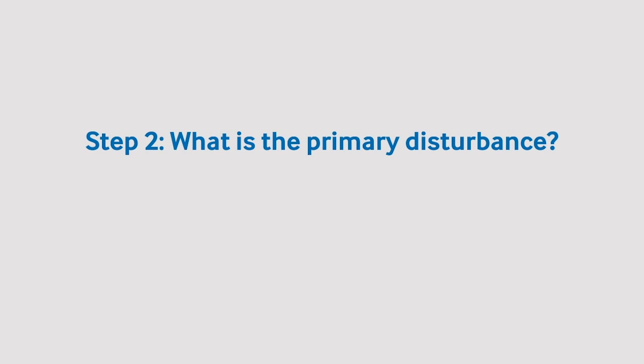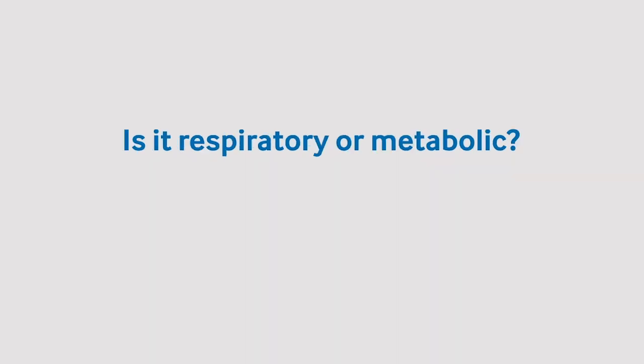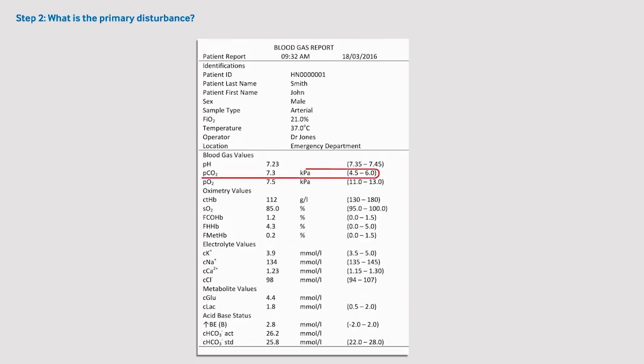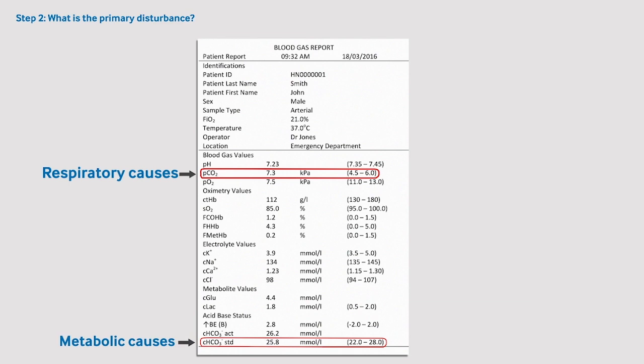The next step is to identify what the primary disturbance is — is it respiratory or metabolic? This is done by reviewing the pCO2, which relates to respiratory causes, and by reviewing the bicarbonate concentration, which relates to metabolic causes.